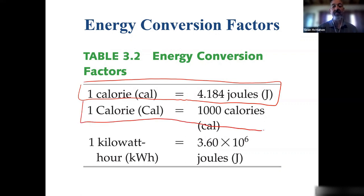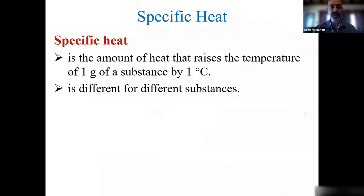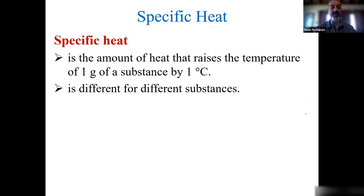Last lecture we did calculations converting between those units. For today we'll continue with heat transfer and units of energy, focusing on specific heat — sometimes called specific heat capacity. Specific heat is the amount of heat that raises the temperature of one gram of a substance by one degree Celsius, and this is different for all substances.